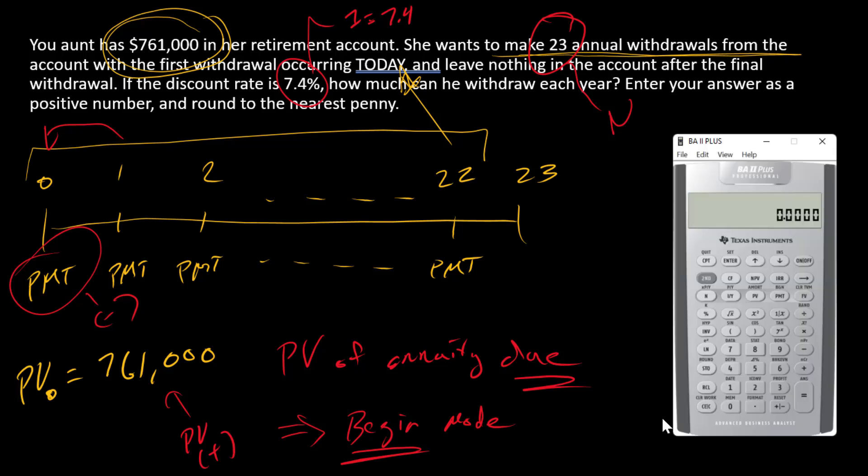So let's get started with the calculator. So I know I need to take 761,000 and put that into PV. I'm going to have 0 as FV because there's not going to be anything left when we're done. 23 is going into N, and 7.4 is going into I.